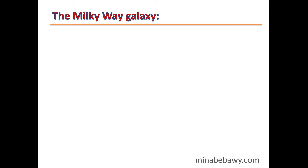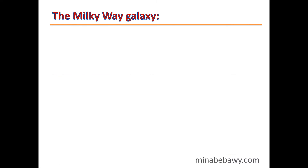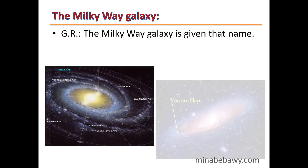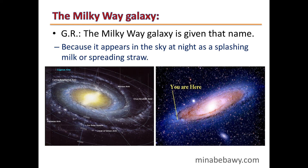The Milky Way Galaxy is our galaxy — the galaxy that contains our solar system. In it, old or large stars gather in the center, while recent or small stars are located in the spiral arms of the galaxy. The Milky Way Galaxy is given that name because it appears in the sky at night as splashing milk or spreading light.